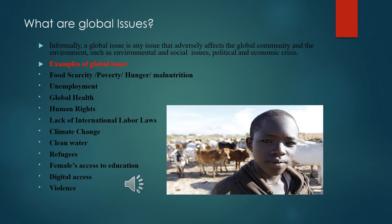What are some examples of global issues? Global issues could be related to food scarcity, which is the shortage or short supply of food, poverty, hunger, malnutrition, unemployment, global health, human rights, lack of international labor laws, climate change, clean water, refugees, females' access to education, digital access, violence, etc.